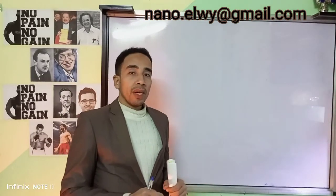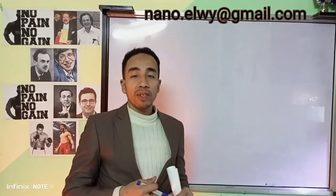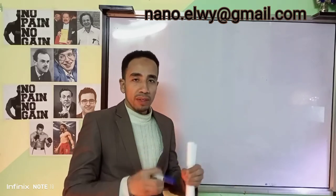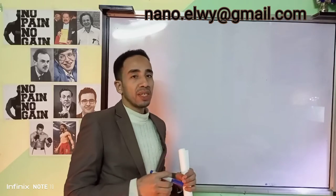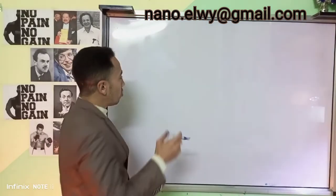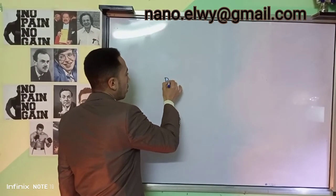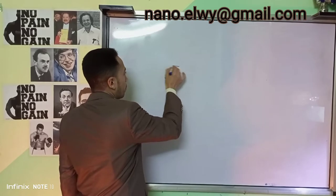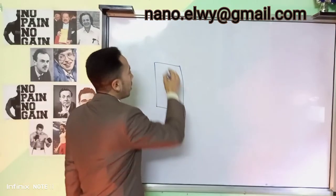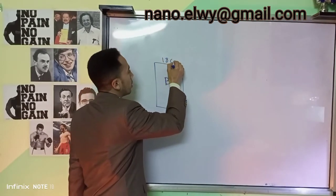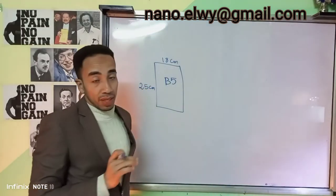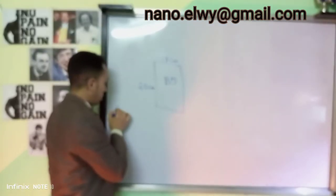In 1959, when that talk was delivered, the Encyclopedia Britannica contained about 24 volumes, and each volume consisted of about 1,000 pages. Each page has dimensions of about 18 centimeters in width and about 25 centimeters in length.